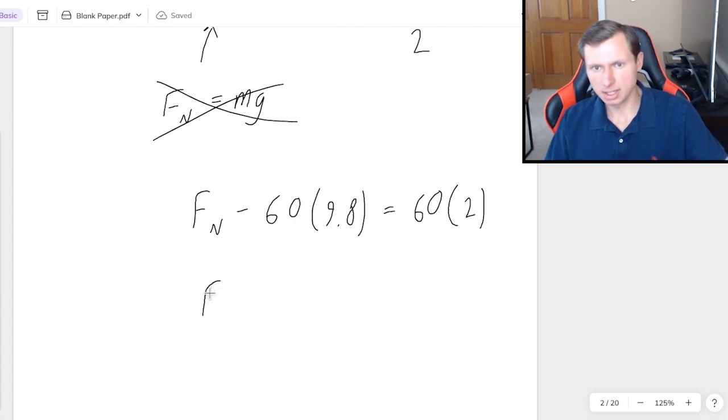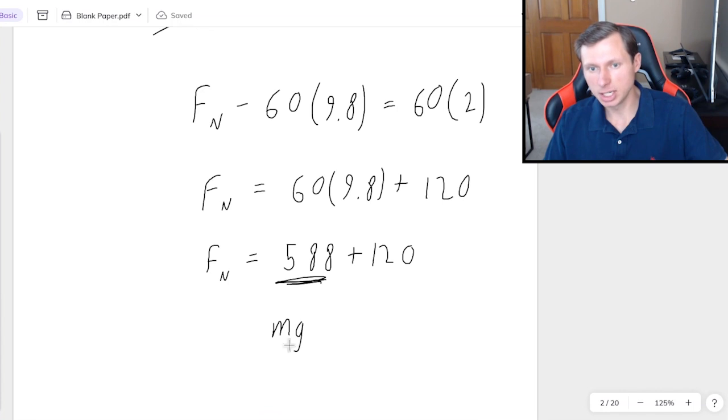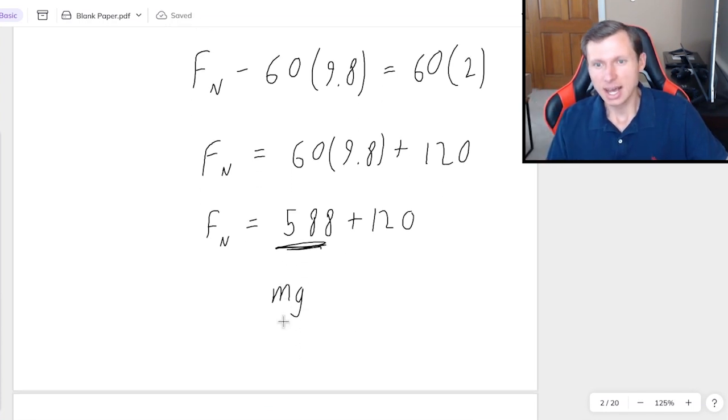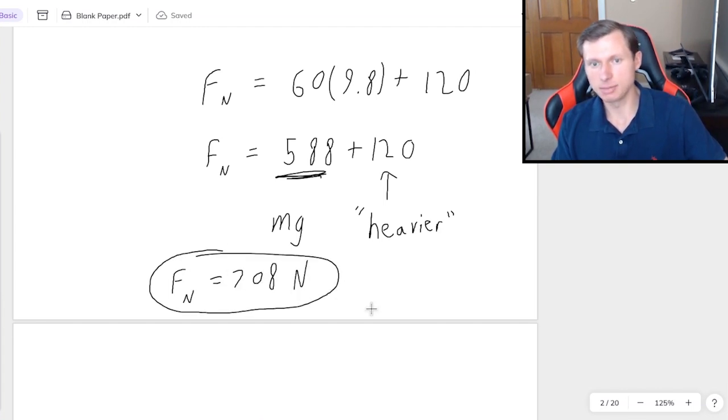So now we just have to basically add the 60 times 9.8 to both sides, plus 60 times 2 is 120. And we'll just plug this in a calculator and get a final answer. So first I'm doing 60 times 9.8, which is 588 plus 120. I want to pause here just for a second. This 588 is the mg, in other words, this is the person's normal weight. However, the 120 is coming from the acceleration, which is going to make the person feel heavier than they actually are. And as a result, the reading on the scale will be higher. So the normal force is 708 newtons, and that's going to be our answer.